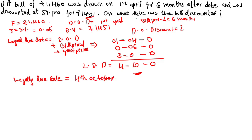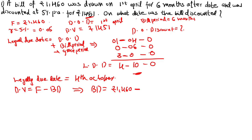Legally due date is 4th October. Since the question asks for the discounted date, next calculate unexpired time. Face value is given as well as discounted value is given. Using the formula: discounted value is equal to face value minus banker's discount. BD is equal to face value 1460 minus discounted value 1451. This implies banker's discount is equal to Rs.9.